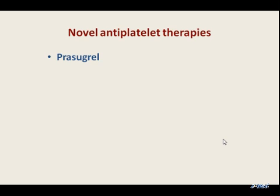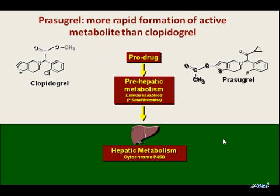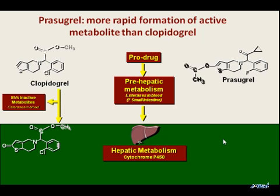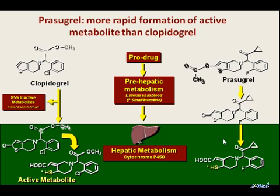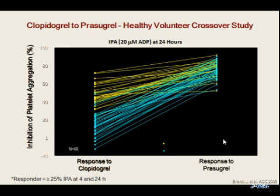If I want to discuss novel antiplatelet therapies, I should start with prasugrel. Prasugrel is a drug that's very similar to clopidogrel, but has a much quicker and much more efficient metabolism from a prodrug into an active compound. Basically, the pathway that transforms the prodrug into the active metabolite is both shorter and more efficient with prasugrel than it is with clopidogrel. However, if you think of the active metabolites, the active metabolite of clopidogrel and the active metabolite of prasugrel are of similar efficiency. So if you look at the platelet response to clopidogrel to the left and prasugrel to the right,